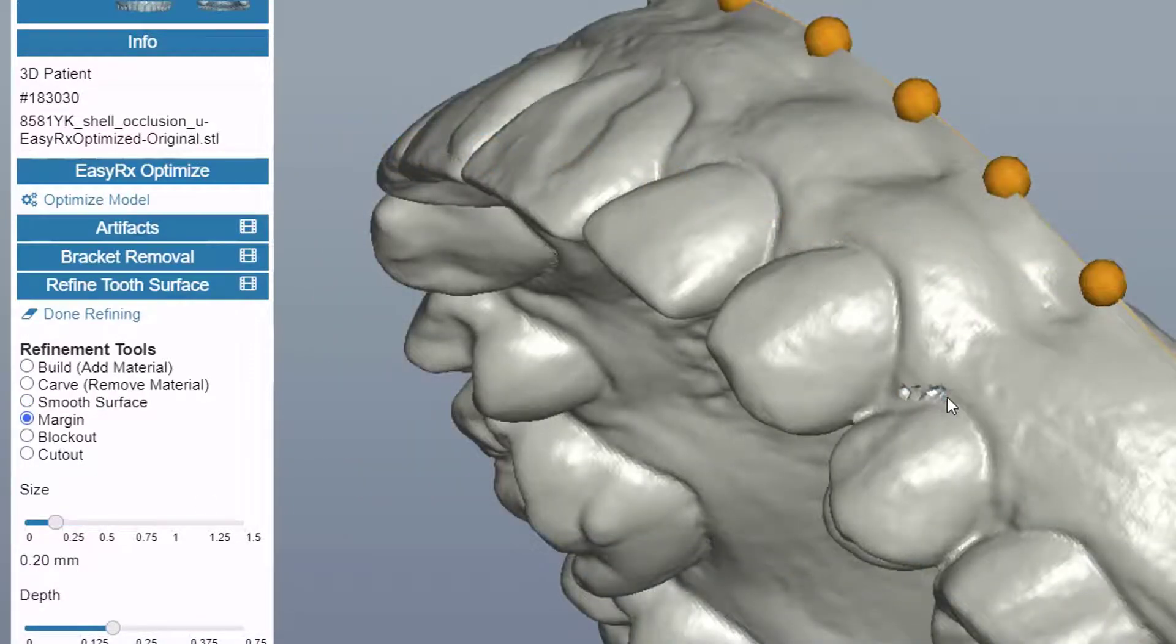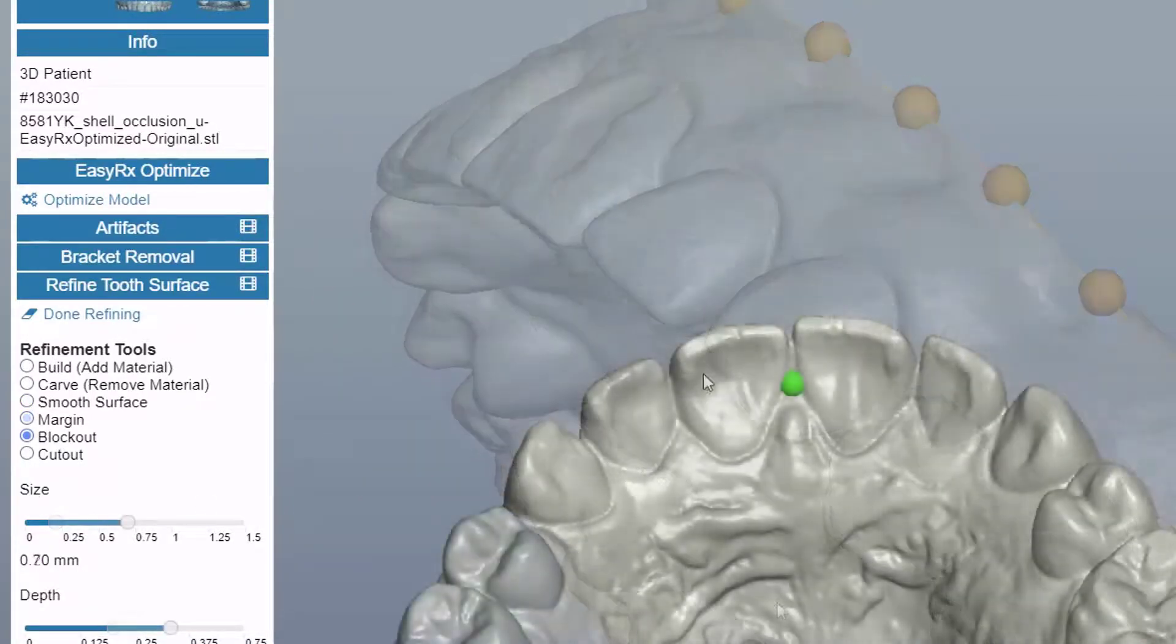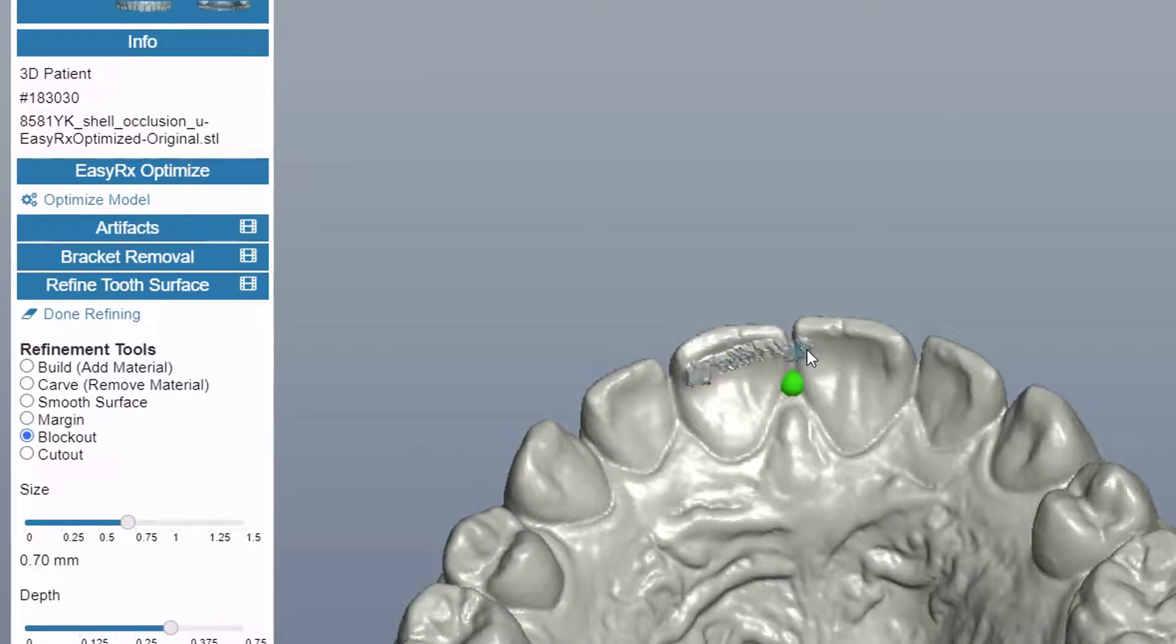The margin tool allows you to define the margins on the tooth. The new refinement tools we've added to the list are block out and cut out.